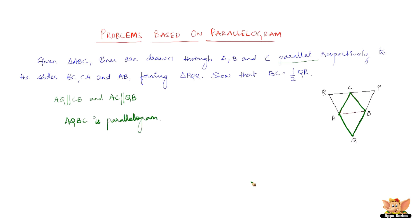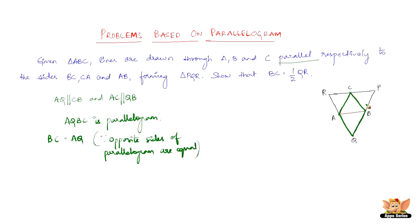We can say that BC equals AQ because opposite sides of a parallelogram are equal. Similarly, we have AR parallel to BC and AB parallel to RC, which makes ARCB a parallelogram.